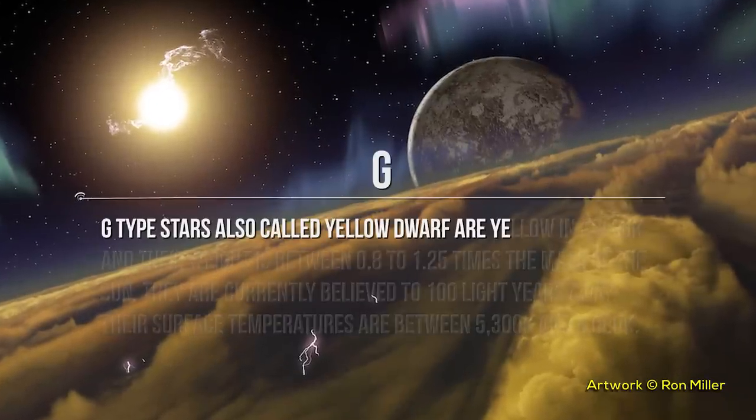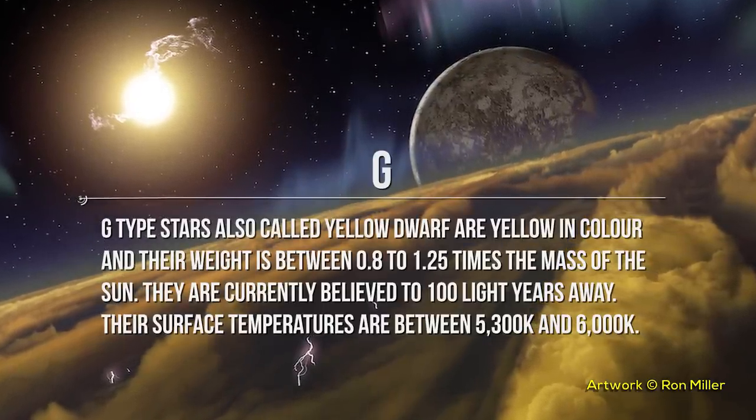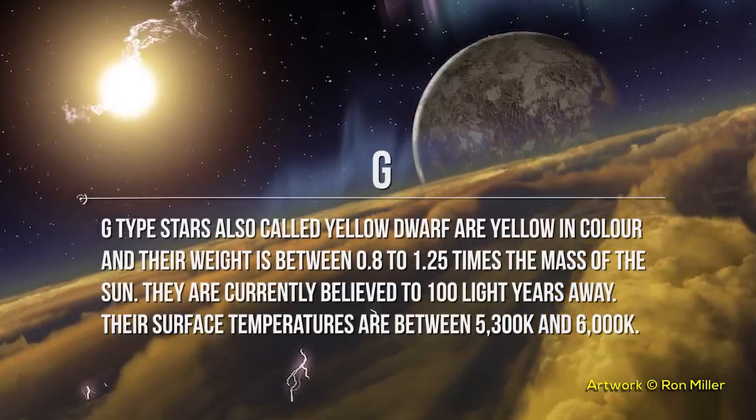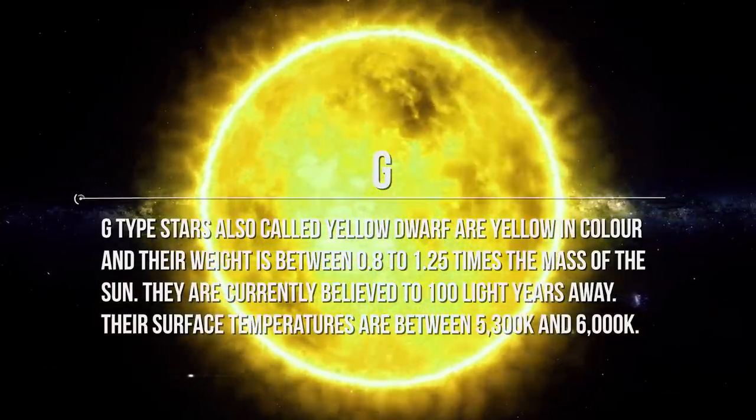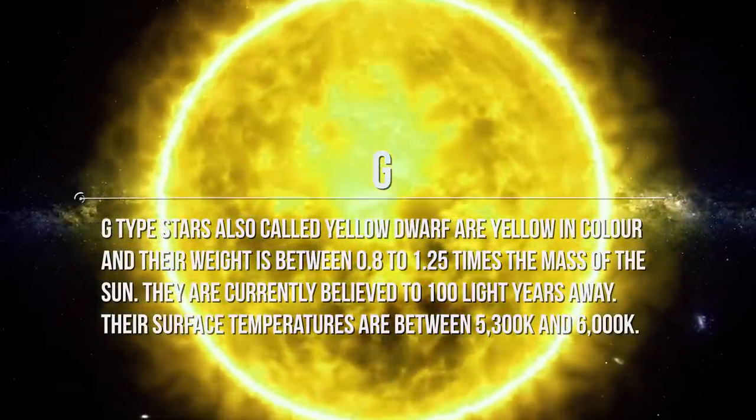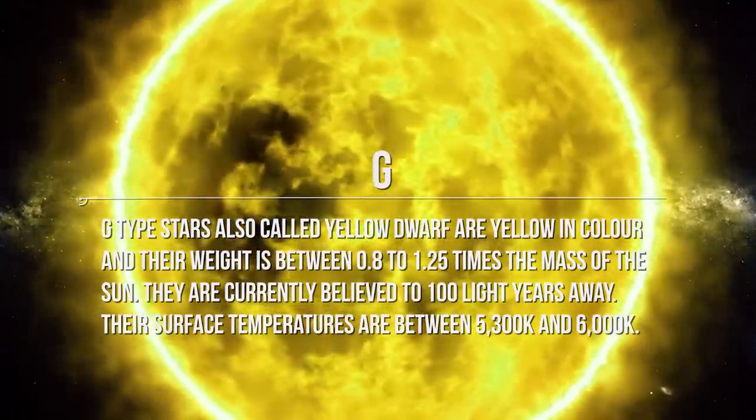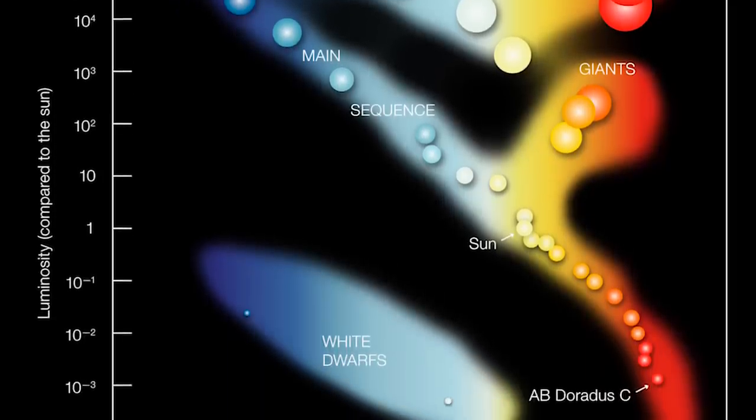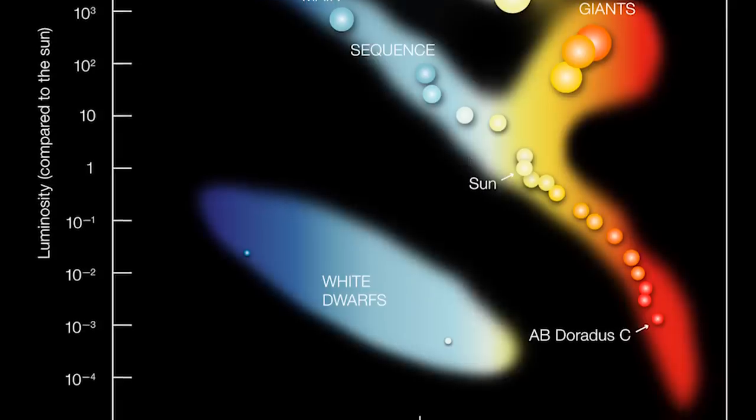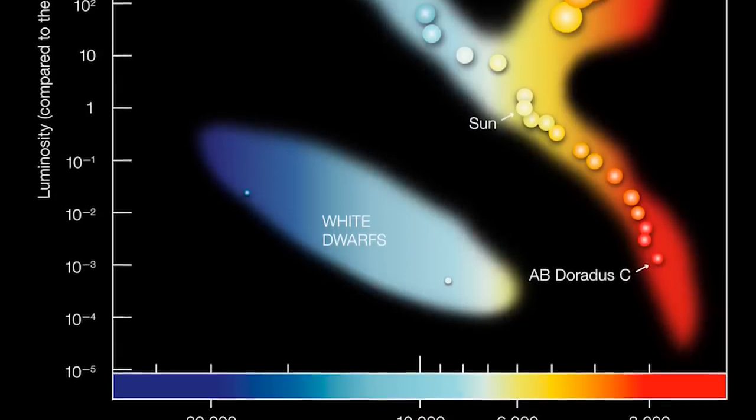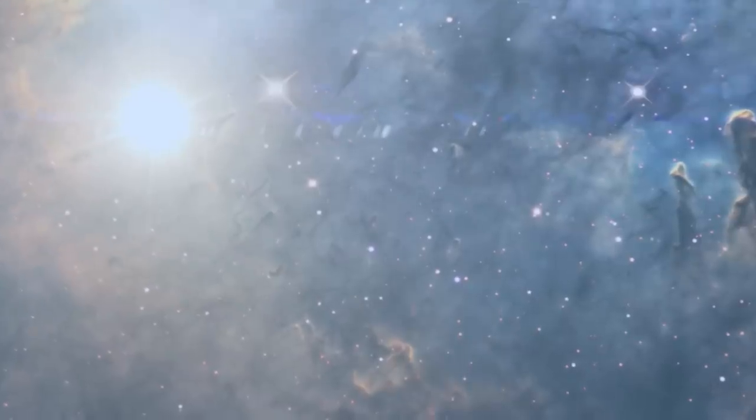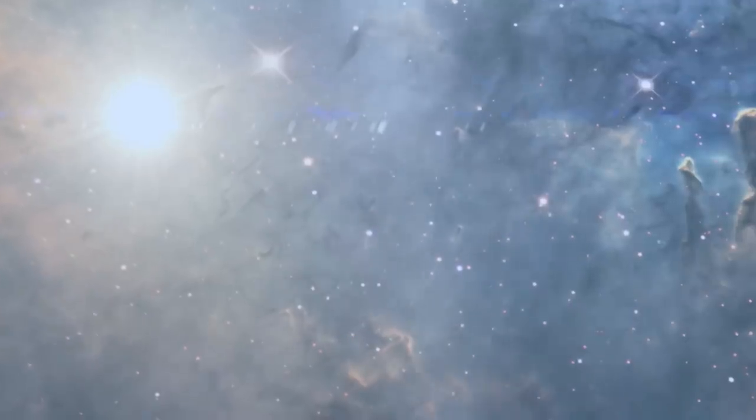Next up we have letter G. G-type stars are also called yellow dwarf and are yellow in color, and their weight is between 0.8 to 1.25 times the mass of the Sun. They are currently believed to be 100 light-years away. Their surface temperatures are between 5,300 Kelvin and 6,000 Kelvin. Class G contains the yellow evolutionary void, an area in the Hertzsprung-Russell diagram where atmospheres of blue-ward-evolving super and hypergiants are moderately unstable. Thus, this type is unstable for supergiants to be. Compared to hotter and brighter OBAF-type stars, G-type stars radiate more light towards the infrared end of the spectrum.